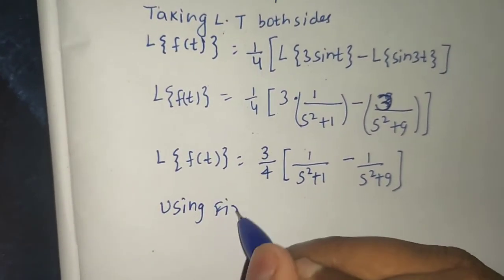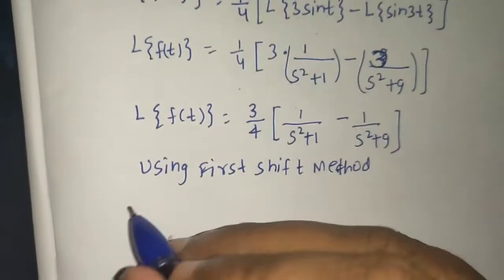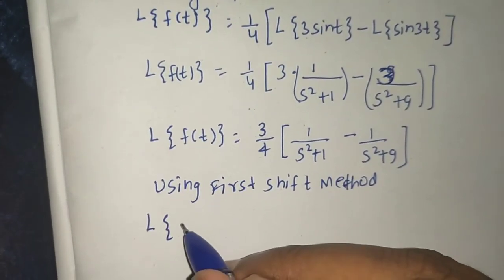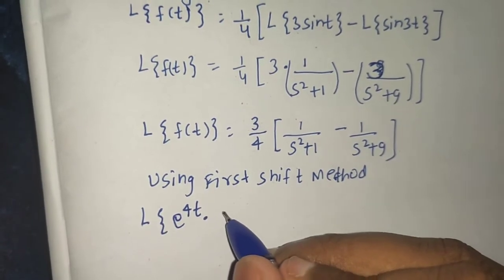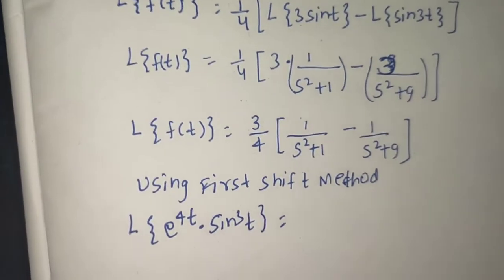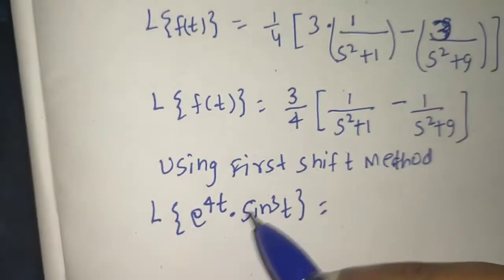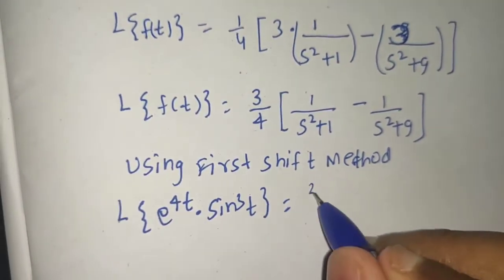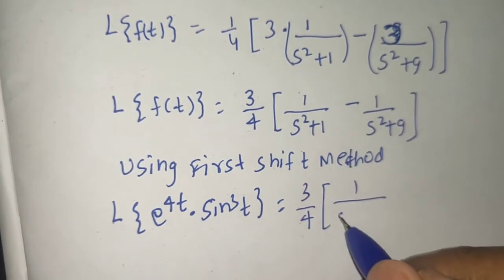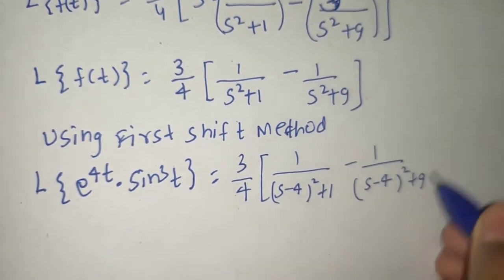Now using the First Shift Method: for Laplace of e^(4t) · sin³(t), wherever we have s we replace it by (s − 4), since a = 4. So we get (3/4) · [1/((s−4)² + 1) − 1/((s−4)² + 9)].